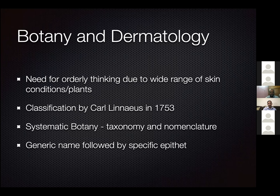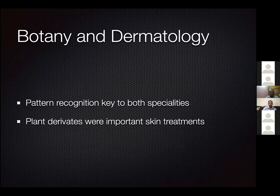Linnaeus proposed classifying plants according to taxonomy and nomenclature — a generic name followed by a specific term. For example, the foxglove plant from which we get digitalis is called Digitalis purpurea. Dermatologists adopted this too, calling conditions like acne vulgaris or acne fulminans depending on the morphology of the skin lesion. Both botany and dermatology are also very visual sciences based on pattern recognition — as long as you have pattern recognition, you're going to be a good dermatologist.